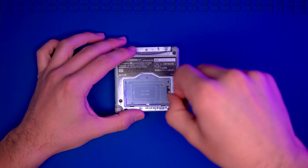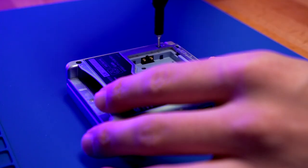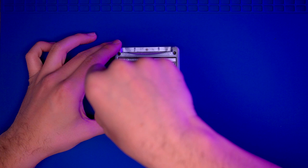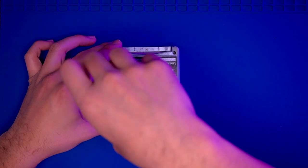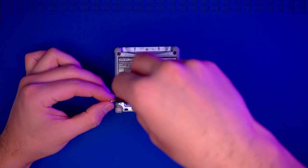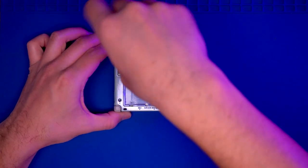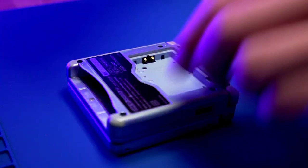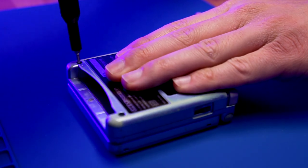Now we're going to remove the four Tri-Wing screws in each of the corners. You'll notice that this console is pretty scratched up, so it is nice that we're going to be replacing the shell.